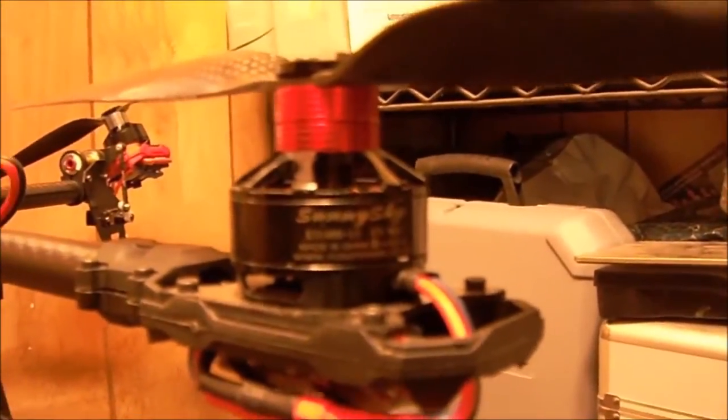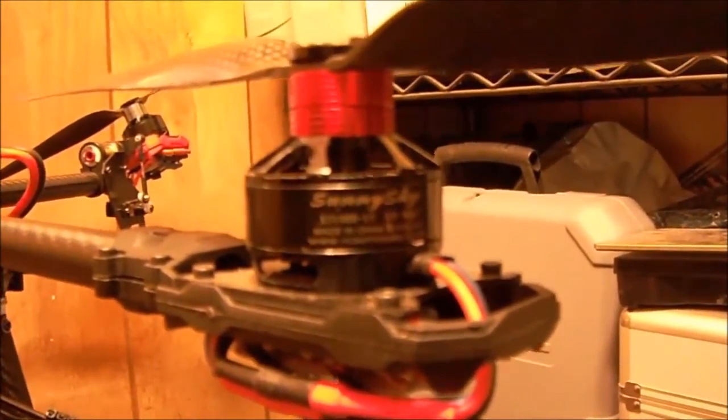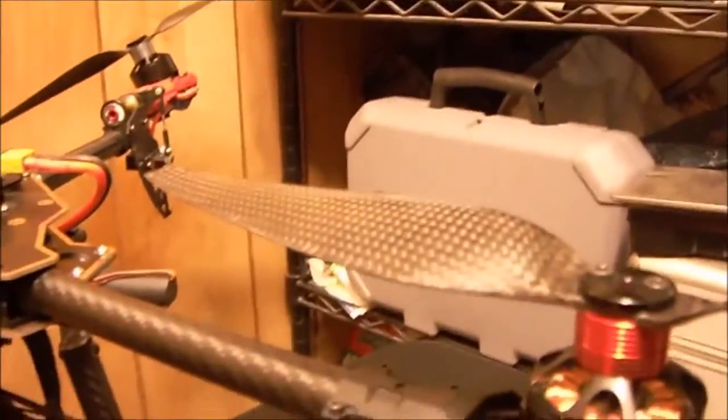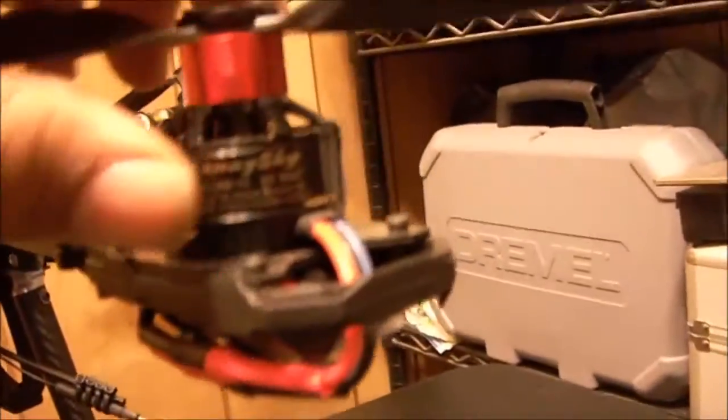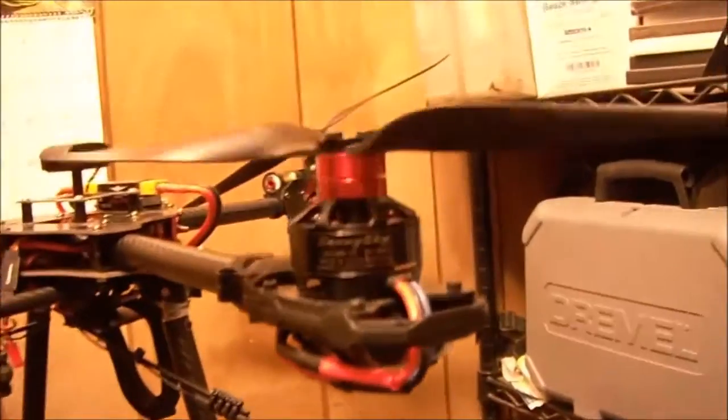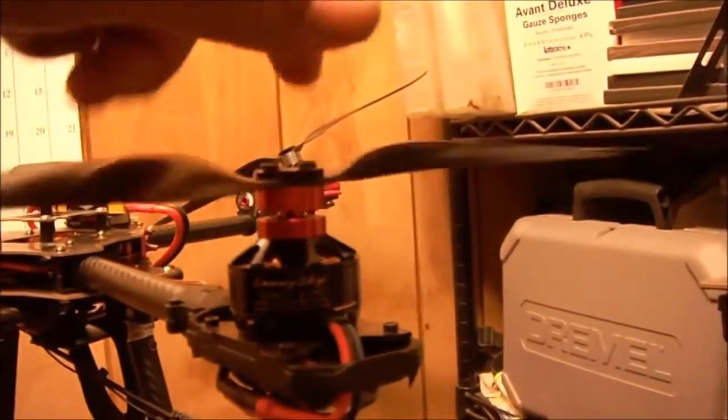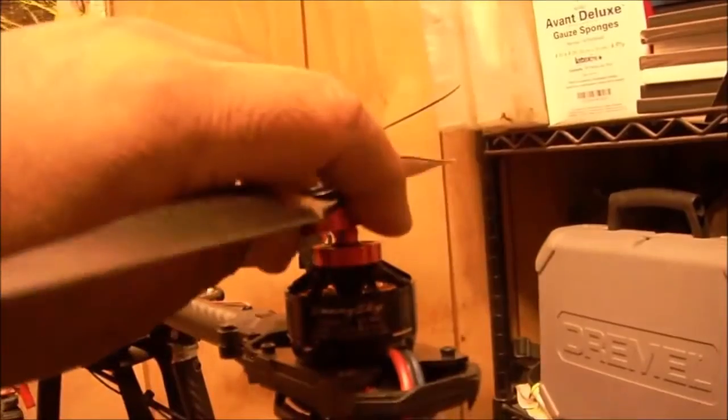The motor is a Sonic Sky 3108, 900 KV. The propellers are 12 inch by 5, carbon fiber. And the propellers are connected to the motor with a quick-release prop mount, as you can see over here.